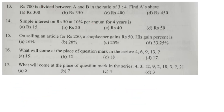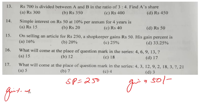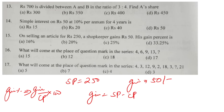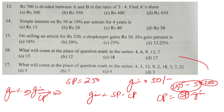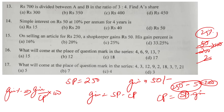Question number 15: selling an article for 220 rupees — find the gain percentage. Gain equals selling price minus cost price. Gain percentage formula: gain divided by cost price multiplied by 100. Cost price equals selling price minus gain. Cancelling gives 25 percent — so option number C is the correct answer.